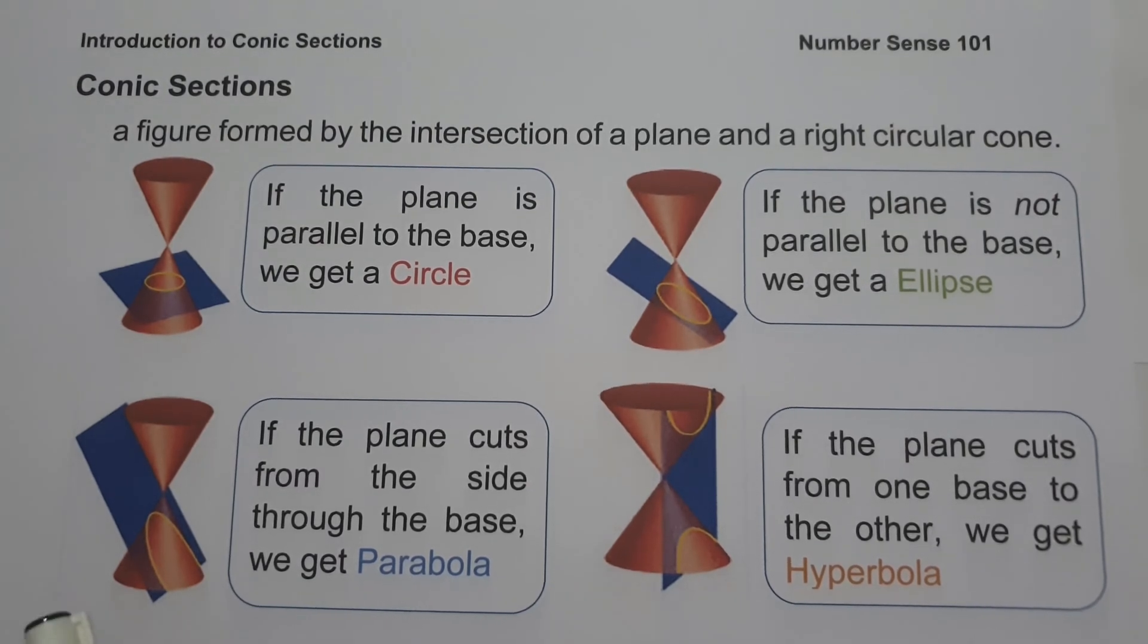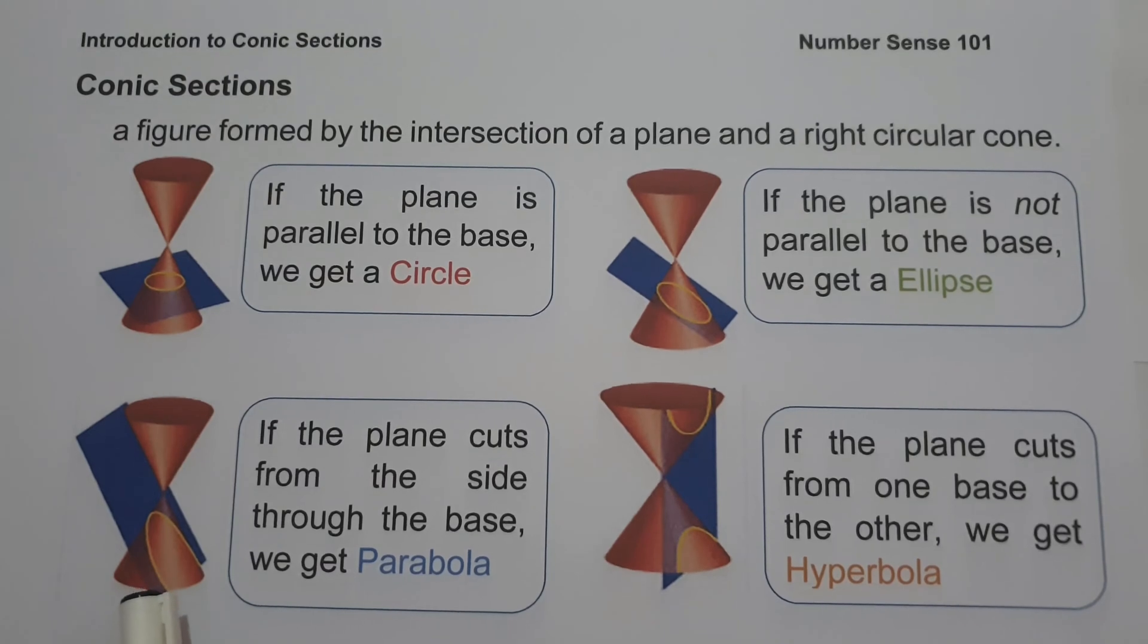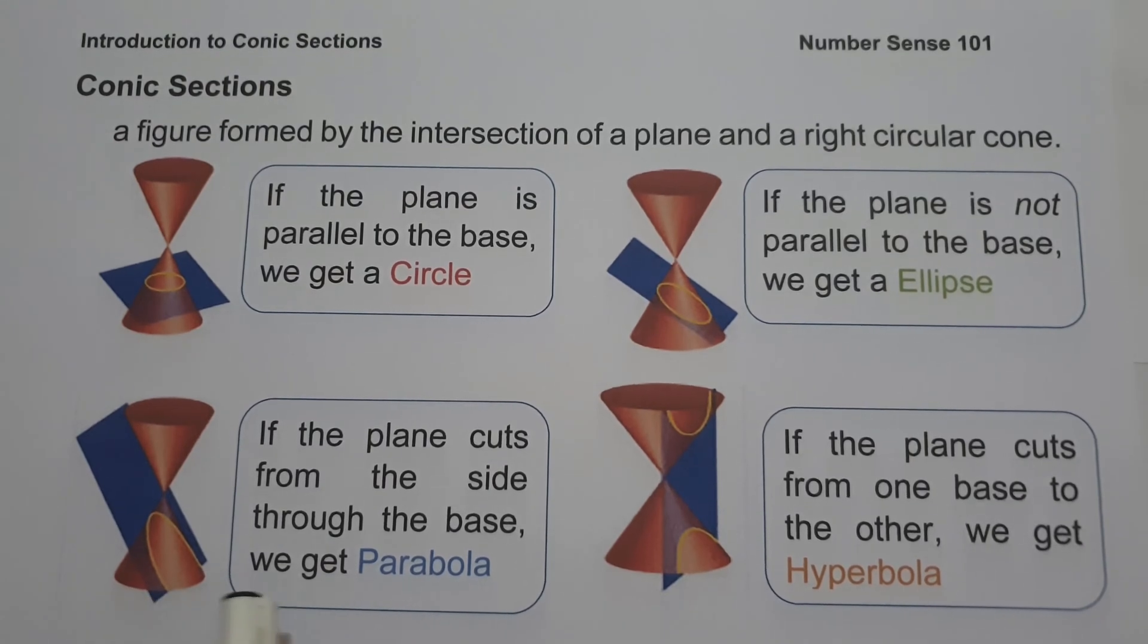Next, if the plane cuts from the side of the cone all the way down to the base, we get a parabola. A parabola is the locus of all points in the plane whose distance from a fixed point and a fixed line is constant.